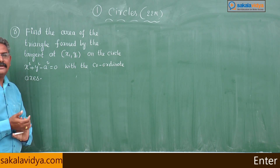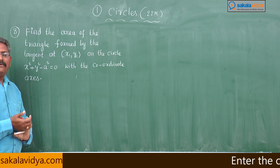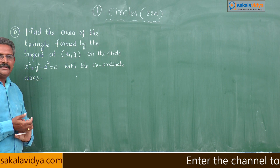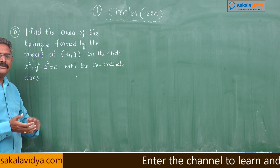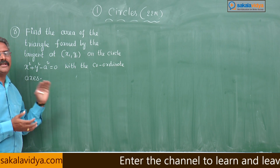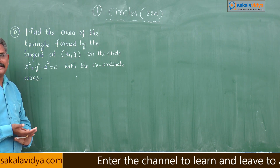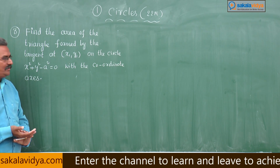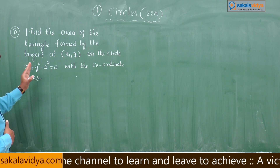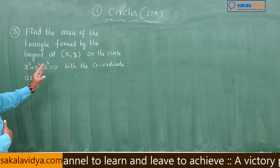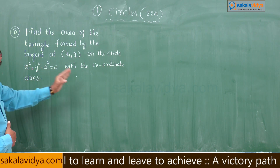First step is to find the equation of the tangent at x₁ comma y₁ to the given circle, that is S₁ equals 0. So, x·x₁ plus y·y₁ minus a² equals 0.